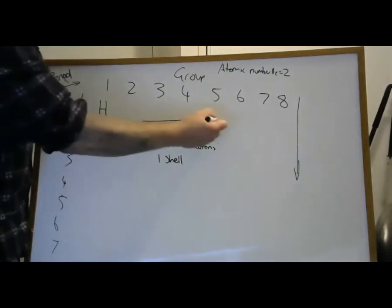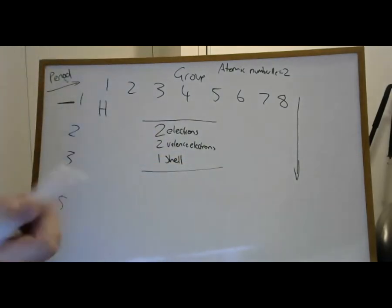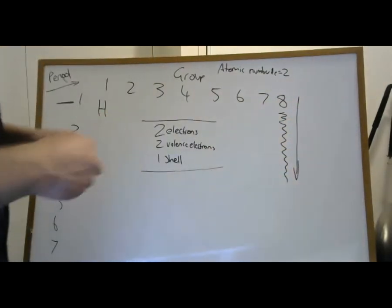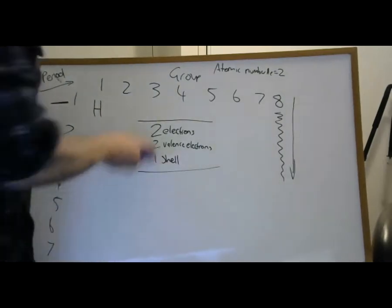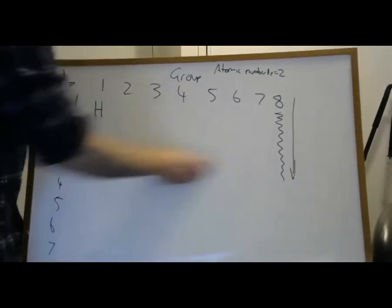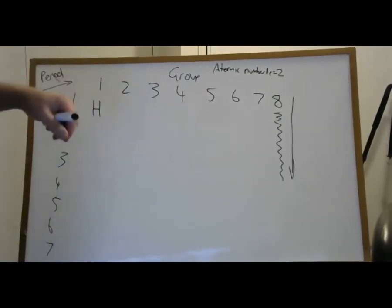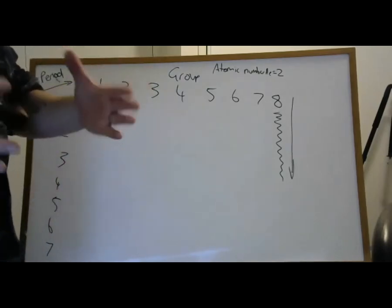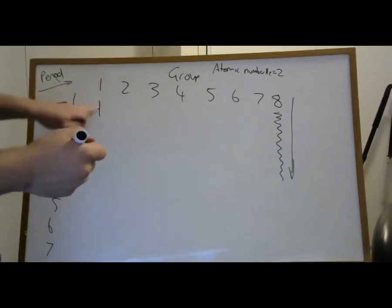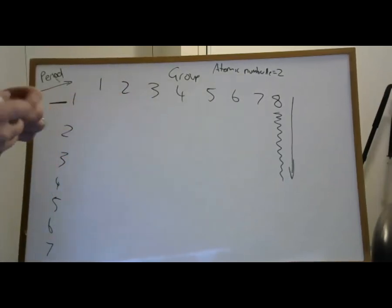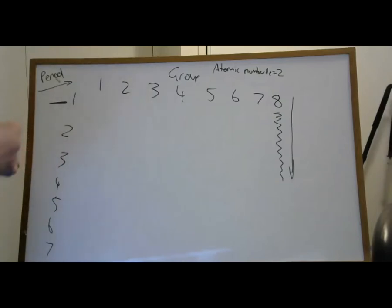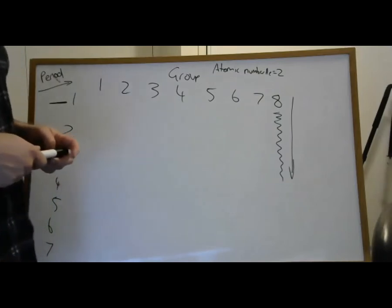Here's something important: these elements — the noble gases — do not react, for the intents and purposes of what you're learning. They are stable and happy; they're what we use in medical gases when we need something to stay inert. This side of the periodic table is the metals. Group one and two are the alkaline metals and alkaline earth metals.